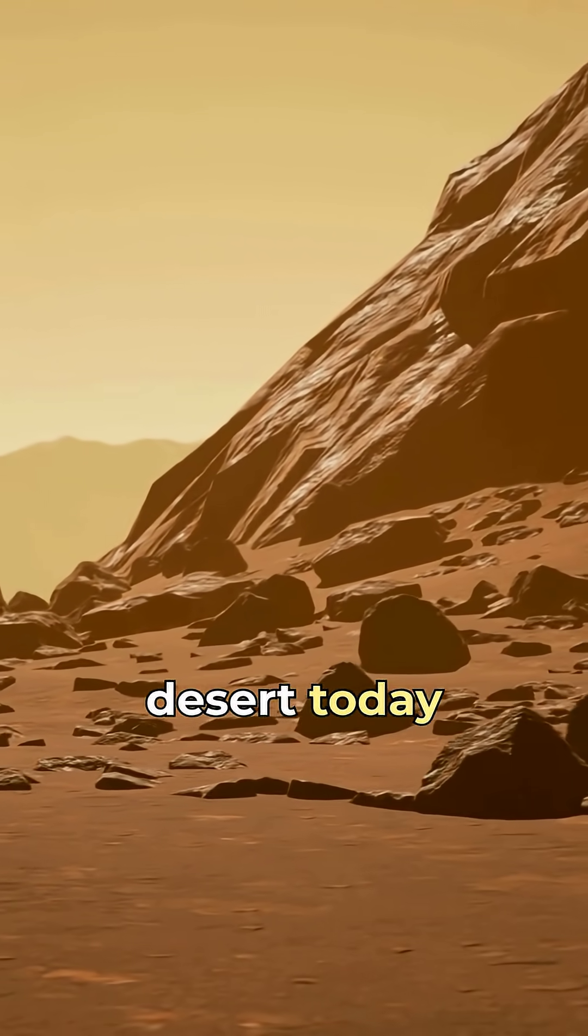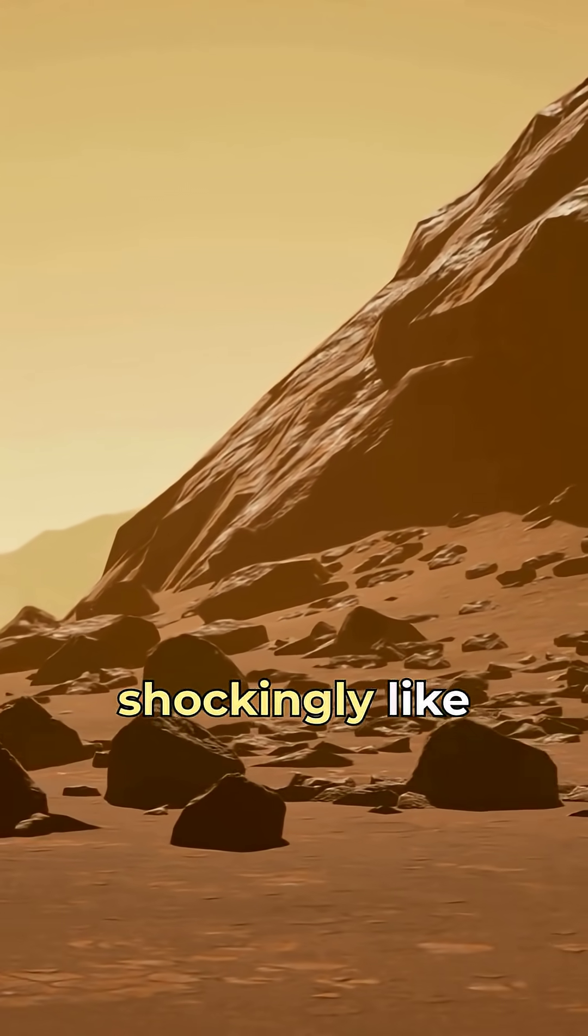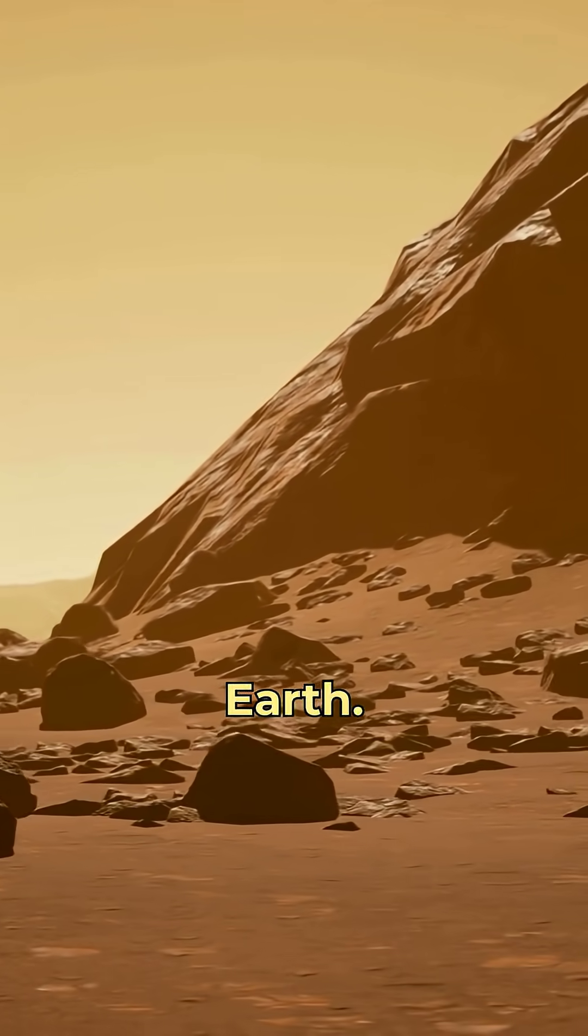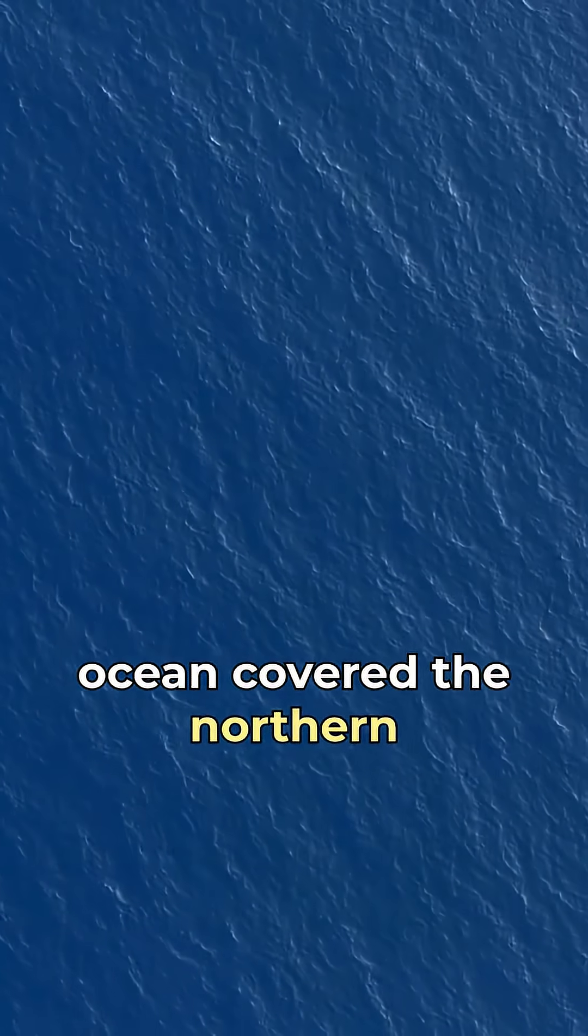Mars, a frozen desert today. But billions of years ago, it looked shockingly like Earth. Rivers carved through its valleys, lakes shimmered under a warm sky, and an entire ocean covered the northern hemisphere.